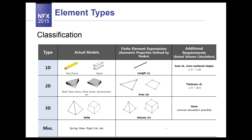Right now I am talking about the element types available in MIDAS NFX — these are the most popular elements. We have one-dimensional elements, two-dimensional elements, 3D elements, and some other special element types. Every type of element has a unique feature. In terms of geometrical properties: one-dimensional elements have a length; for 2D we have two dimensions describing the element; and 3D elements have volume as the main geometrical feature. So the main geometrical feature for 1D is length, for 2D it is area, and for 3D there is volume.